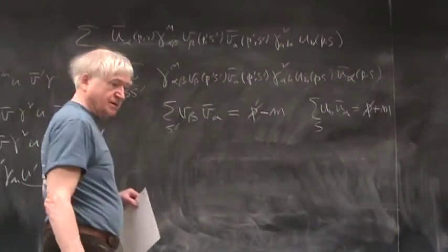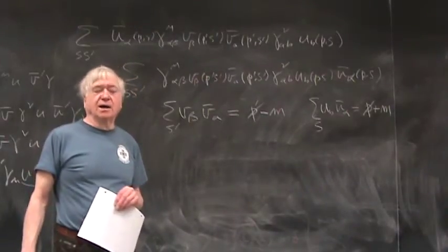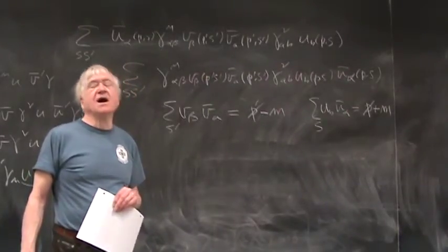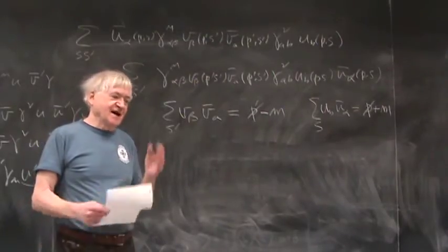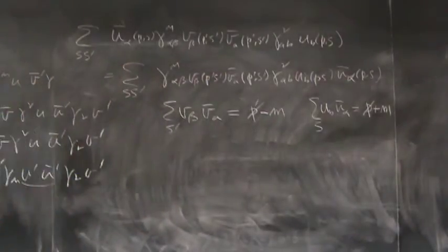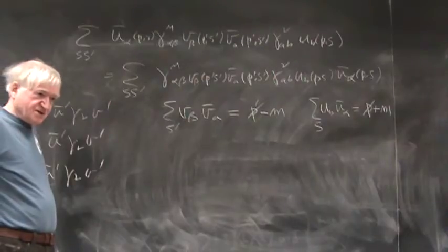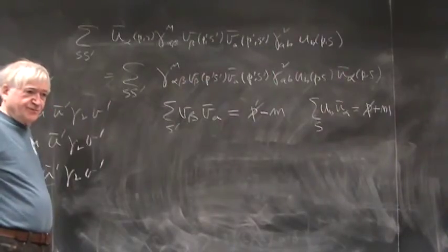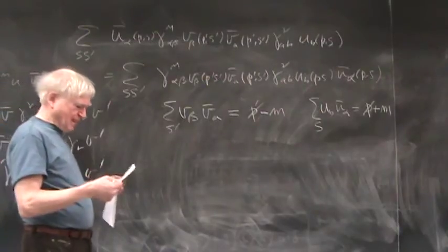And now we can go to - we can say that v_β v̄_a summed over s' is p'̸ - m_e. And then over here u_b ū_α summed over s is p̸ + m_e. So this is averaging over initial polarization. Right.